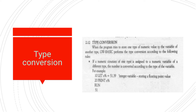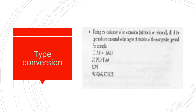So rule number one is: if a numeric constant of one type is assigned to a numeric variable of a different type, QBasic converts it according to the variable's type. Since we used an integer type variable, the number was also converted to integer type.